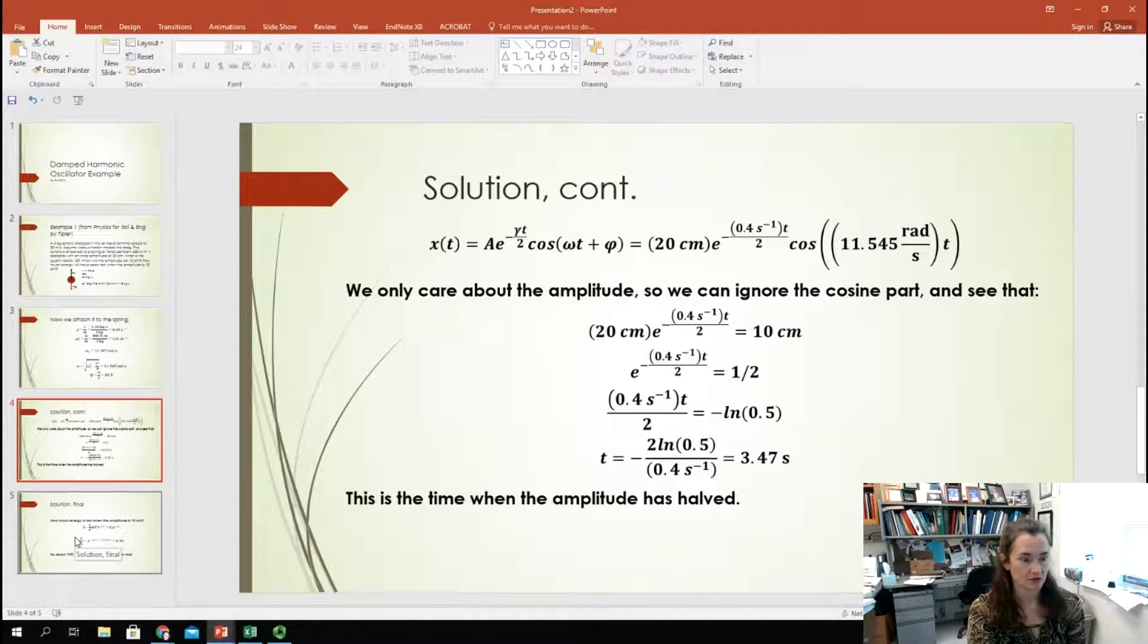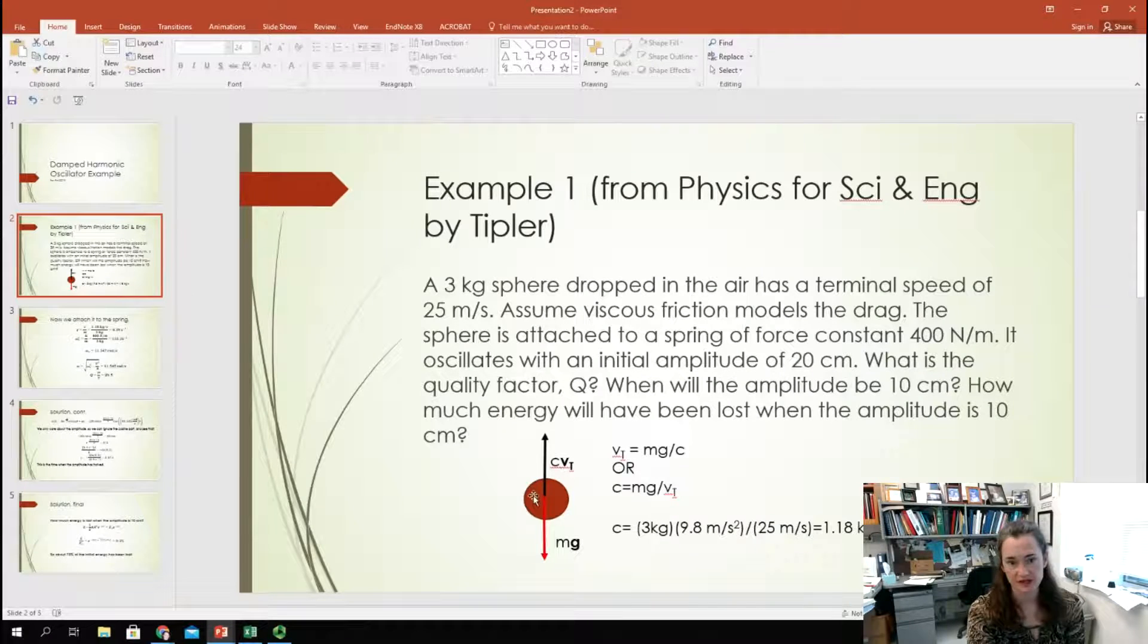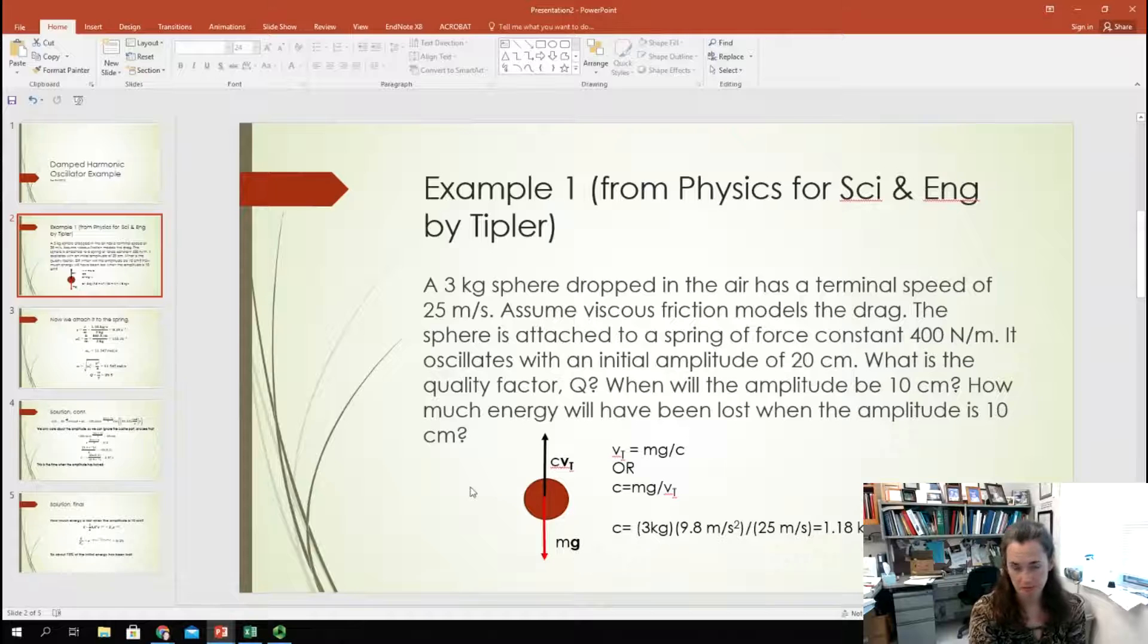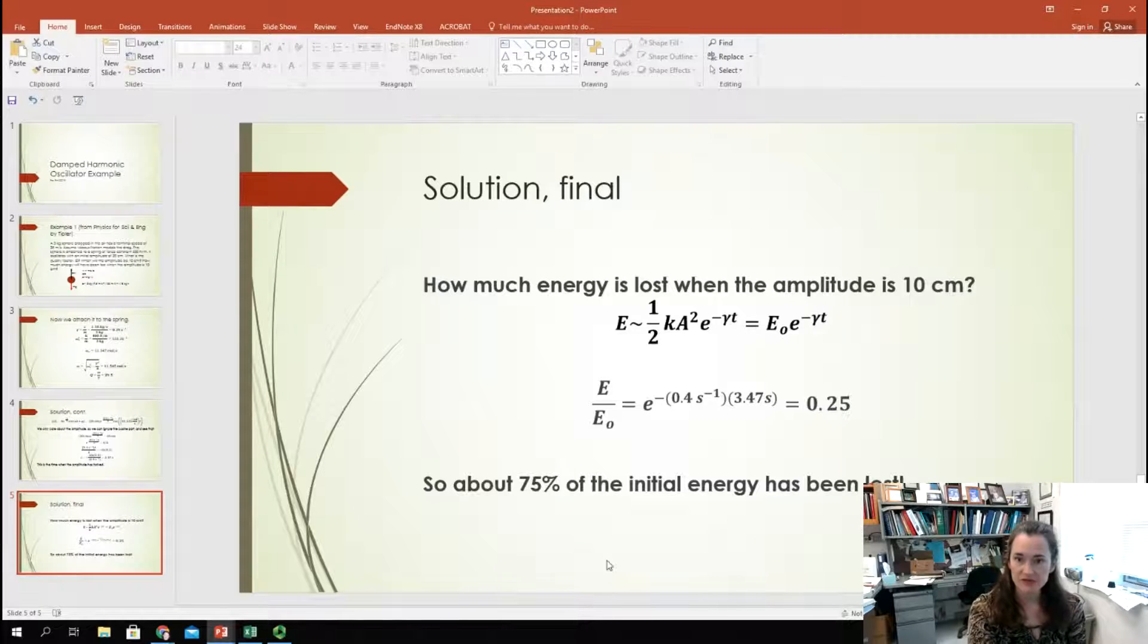Okay? Alright. Now, the last part of the question says, how much energy will have been lost when the amplitude is 10 centimeters? Okay. Well, we do know that this is a light damping situation. And in a light damping situation, we can say that the energy is proportional to one half k*A^2 times e^(-gamma*t). Or, that the energy is proportional to the initial energy times e^(-gamma*t). So, we know this is light damping because the damped frequency is really close to the natural frequency. Right? We saw that.